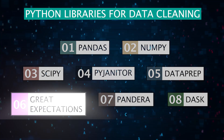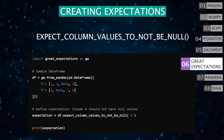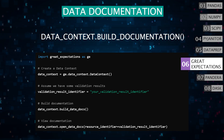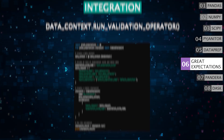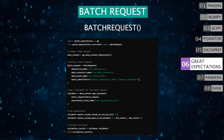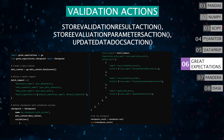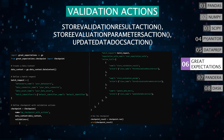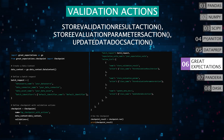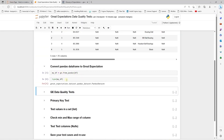Let's talk about Great Expectations. This library focuses on data validation, testing, and documentation. Define data expectations to validate data quality, and automatically document those expectations and validation results. It easily integrates with existing data pipelines and tools. Validate data in batches with batch_request. Set up checkpoints for validation with checkpoint. Validate actions with functions such as store_validation_result_action, store_evaluation_parameters_action, and update_data_docs_action. Great Expectations ensures your data meets quality standards before you proceed with analysis.